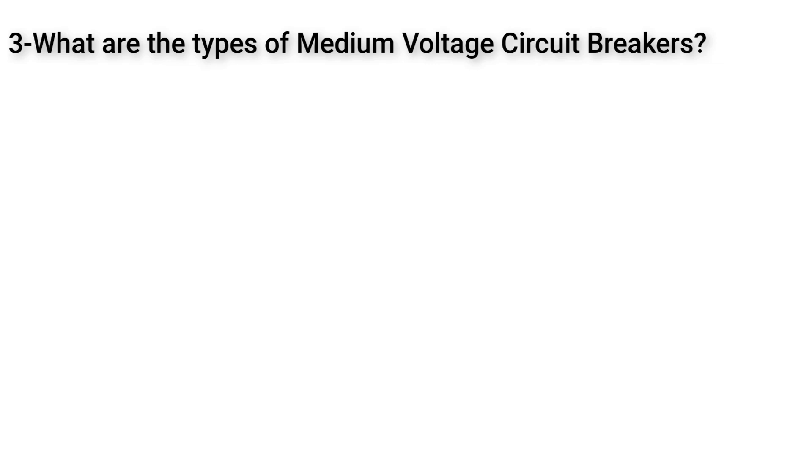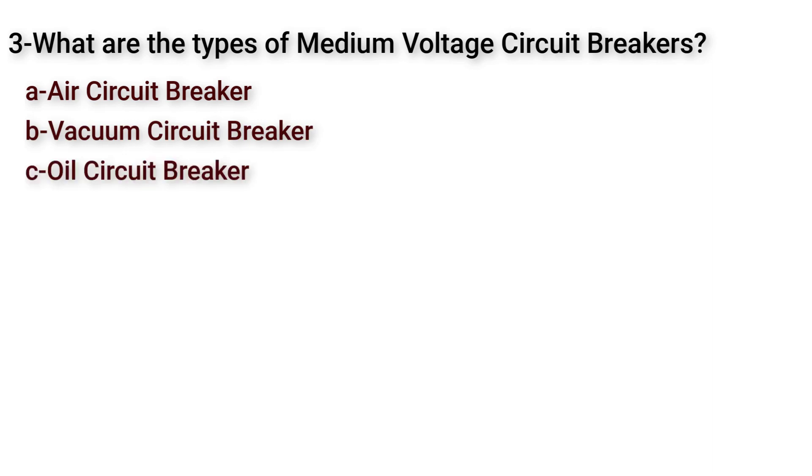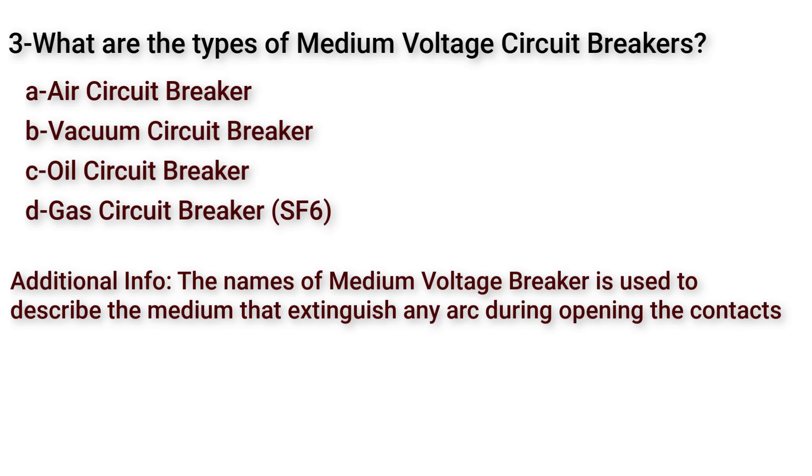The answer is air circuit breakers, vacuum circuit breakers, oil circuit breakers and at last gas circuit breakers which use SF6 gas. As you can see here we call the breakers on these names to describe the medium we use with the contacts to extinguish the electric arc during opening the contacts.